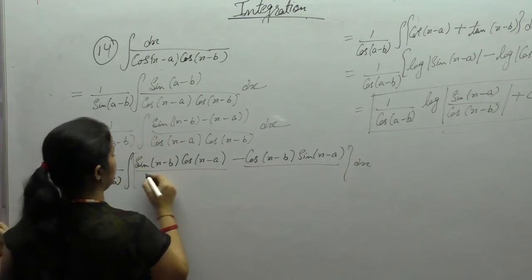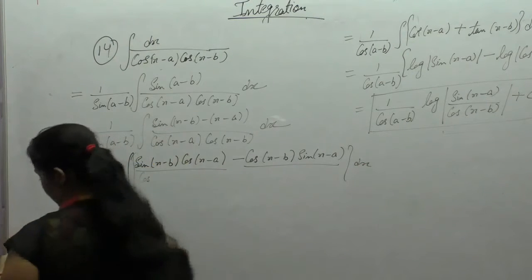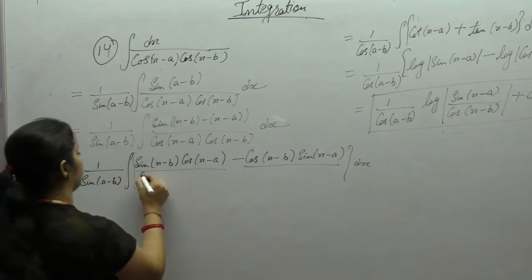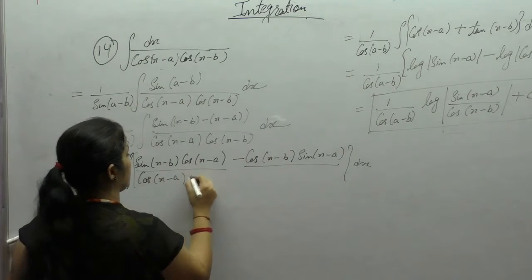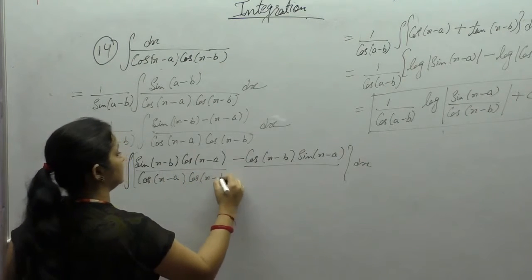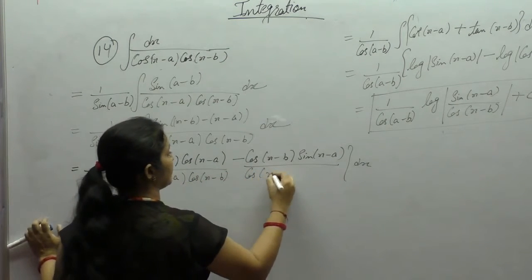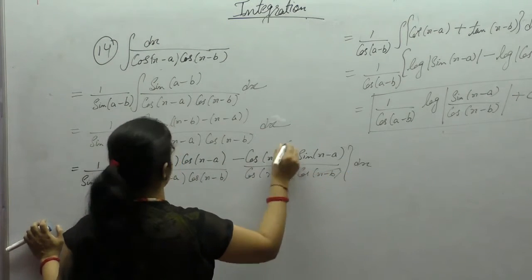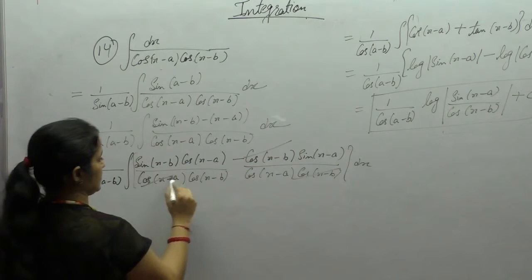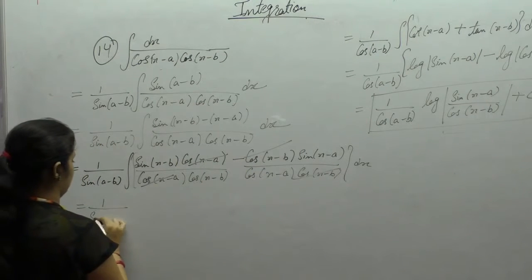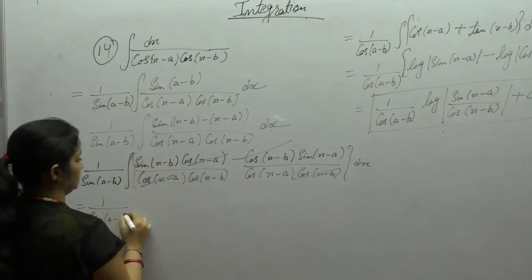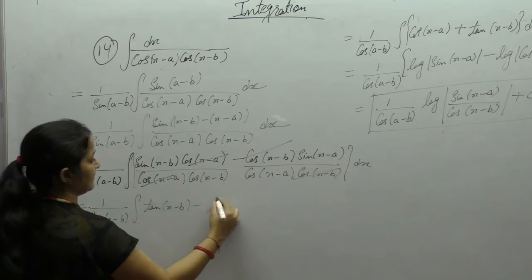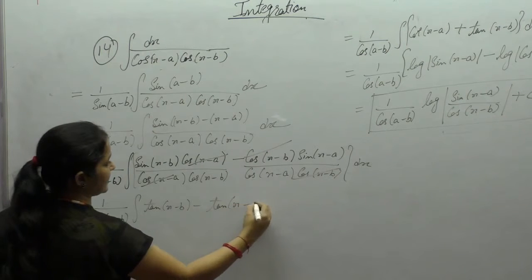The denominator becomes cos(x minus a) times cos(x minus b). Here we can see cos(x minus b), and sin upon cos is tan, giving us the integration of tan(x minus b) minus tan(x minus a).